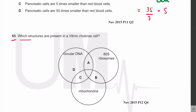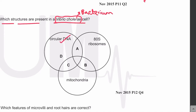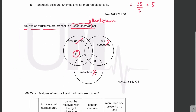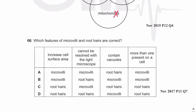MCQ 65: Which structures are present in a Vibrio cholerae cell? Vibrio cholerae is a bacterium — a prokaryotic cell. Prokaryotes contain circular DNA, no mitochondria, and no 80S ribosomes. The answer is D: Vibrio cholerae only contains circular DNA.